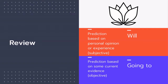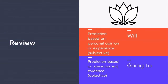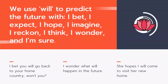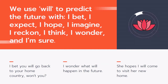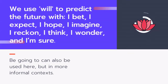Let's review: we use will to make a prediction based on personal opinion or experience — subjective predictions. We use going to to make a prediction based on current evidence — objective predictions. We also use will to predict the future with phrases like 'I bet,' 'I expect,' 'I hope,' 'I imagine,' 'I reckon,' 'I think,' 'I wonder,' and 'I'm sure.' We can also use going to in this situation, but it's more informal, so I recommend just using will.